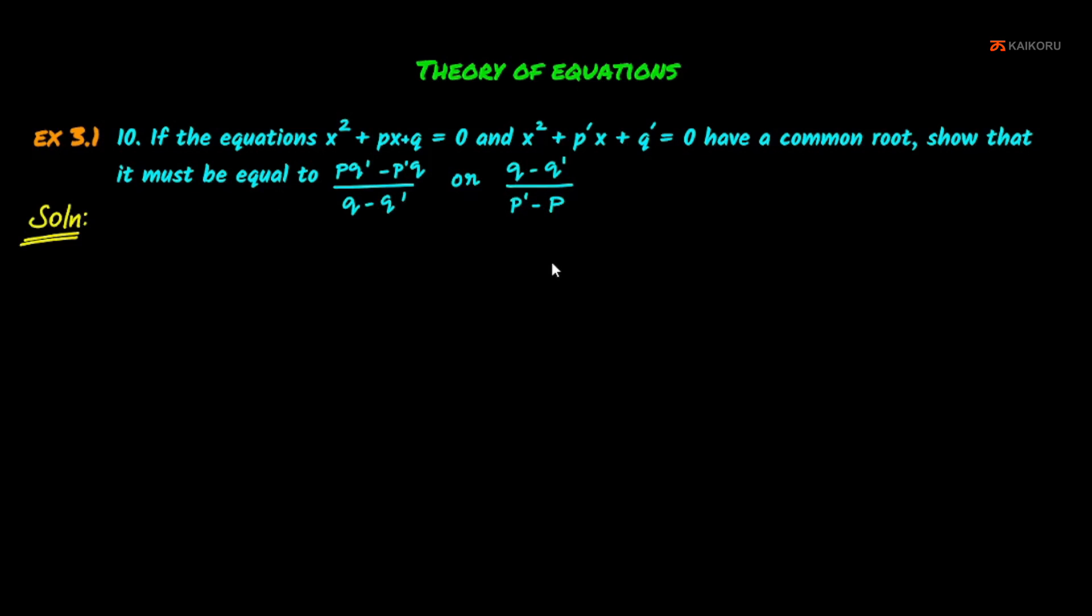We have to prove it equal to this or this. Let the common root be α. Then α² + pα + q = 0, this is the first equation. And α² + p'α + q' = 0, this is the second equation.